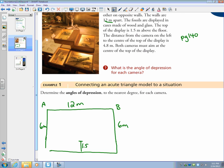It also says the distance from the camera on the left to the center of the top of the display is 4.8 meters. Both cameras must aim, so then we also have something going on right here. And what we want to know is the angle of depression. We want to know this, and we want to know that.